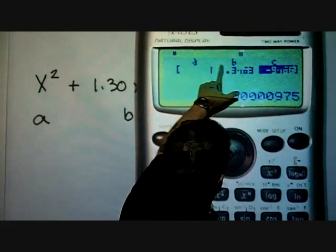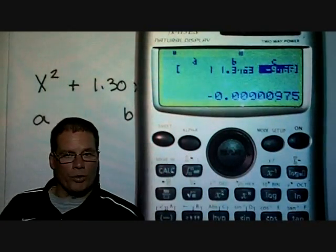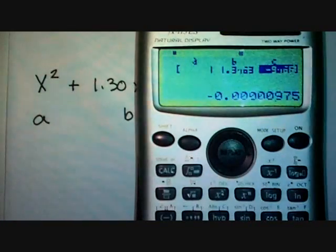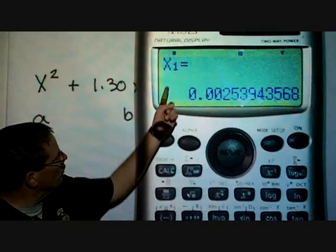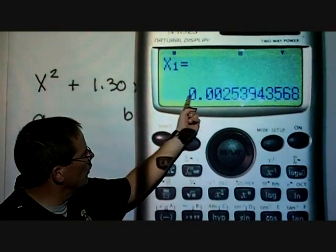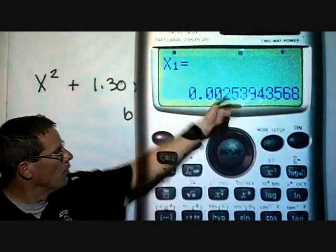Now we have the values in for A, B, and C in our quadratic equation. We need to hit the equal sign one more time. It takes a second or two, but it gives us our first value, X₁. Notice that this is our positive value, 0.002594.